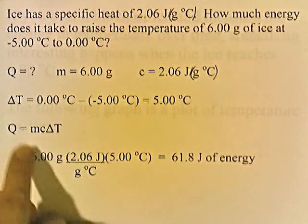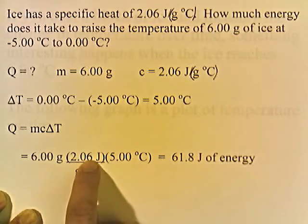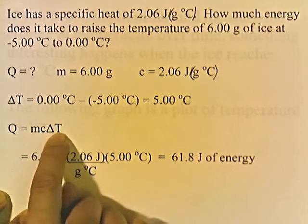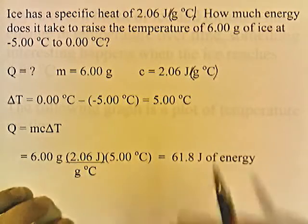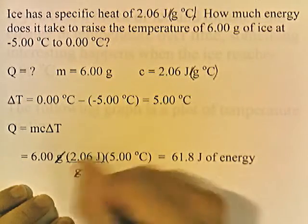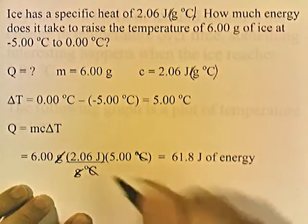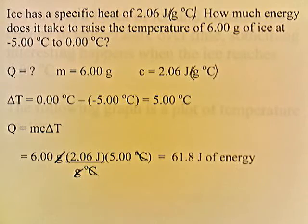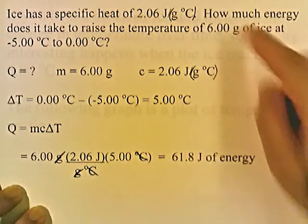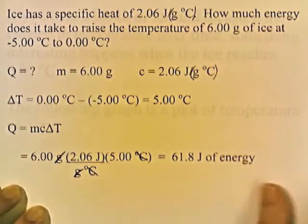Q equals MC delta T. M is 6, C is 2.06, and delta T is 5. Setting it up, you can see how the units cancel — grams cancel, degrees Celsius cancels — and you're left with joules. Multiplying gives 61.8 joules of energy. So to raise the temperature of 6 grams of ice from negative 5 to 0 degrees, you have to add 61.8 joules.